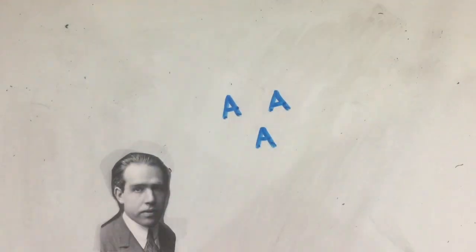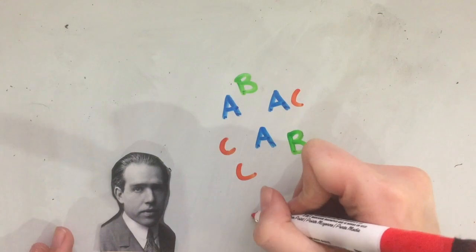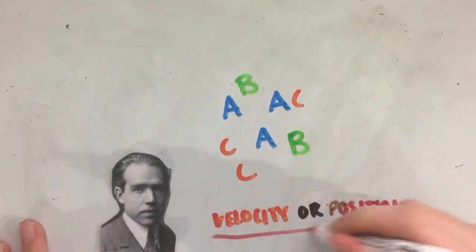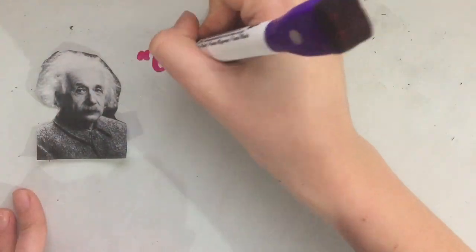Bohr was the opposite. He believed in probability, the fact that a particle could exist in multiple states at once, and the Heisenberg uncertainty principle. When asked about his beliefs, Einstein famously said,